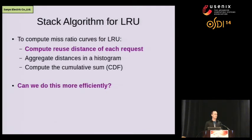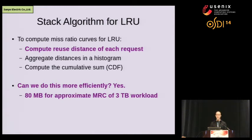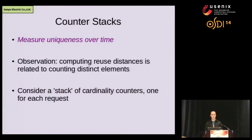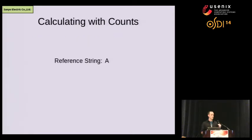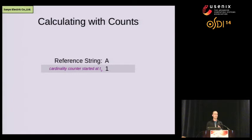The most expensive step is computing reuse distances, and the answer is we can do this more efficiently. We've developed a technique that lets us compute approximate reuse distances and, by extension, approximate MRCs in sublinear memory — reducing the MSR Cambridge computation from 92 gigs of RAM to just 80 megabytes. We use a new data structure called the counter stack, which measures uniqueness over time. As a thought experiment, imagine a stack of cardinality counters — one counter for every request in a storage workload. For a reference string of disk addresses A, B, C, A: we start a cardinality counter at A, increment it at B and C. When we see A again, the first counter has already seen A, so its cardinality does not increase, while subsequent counters do.